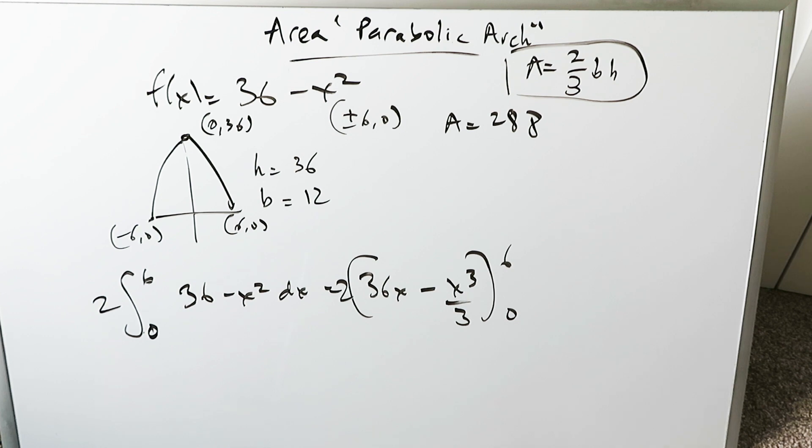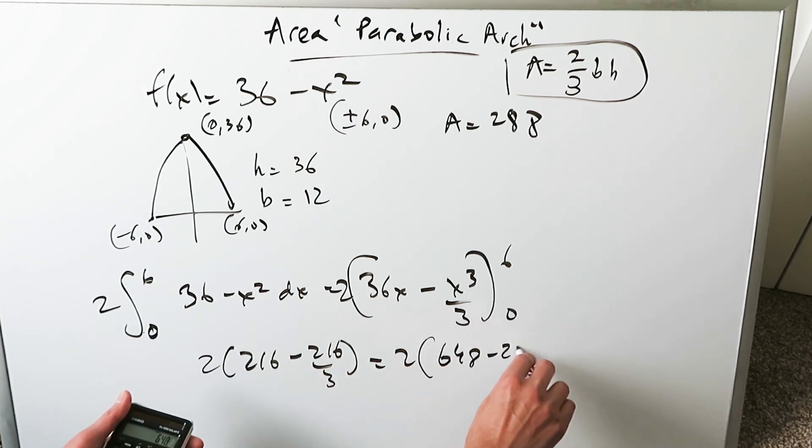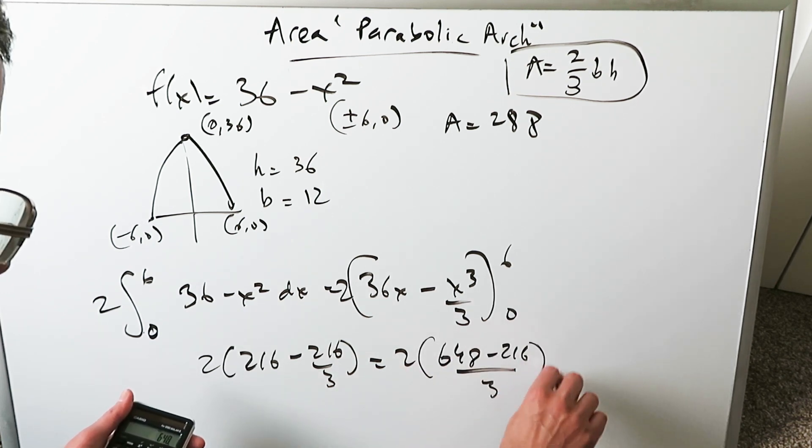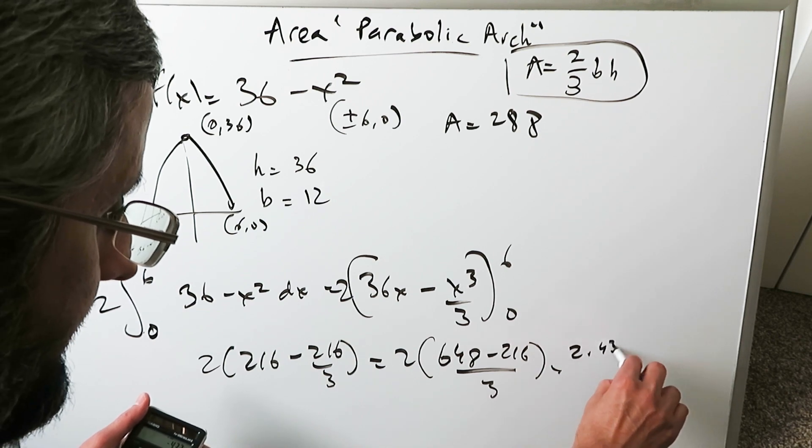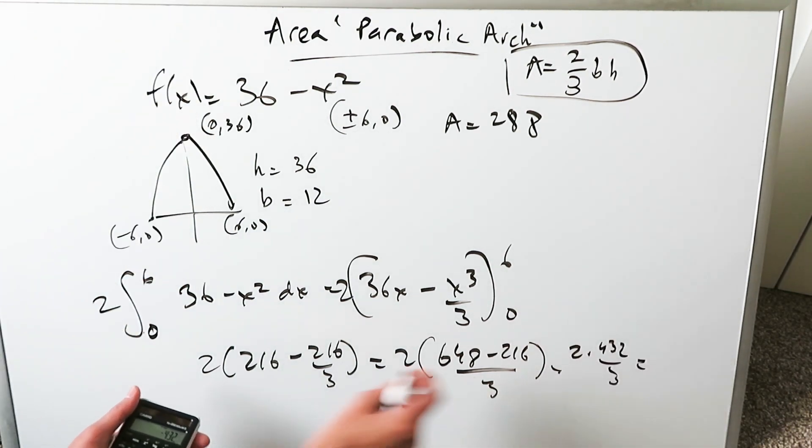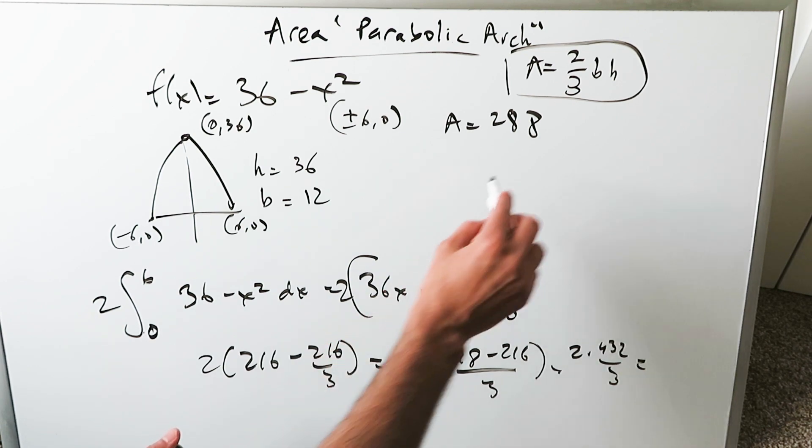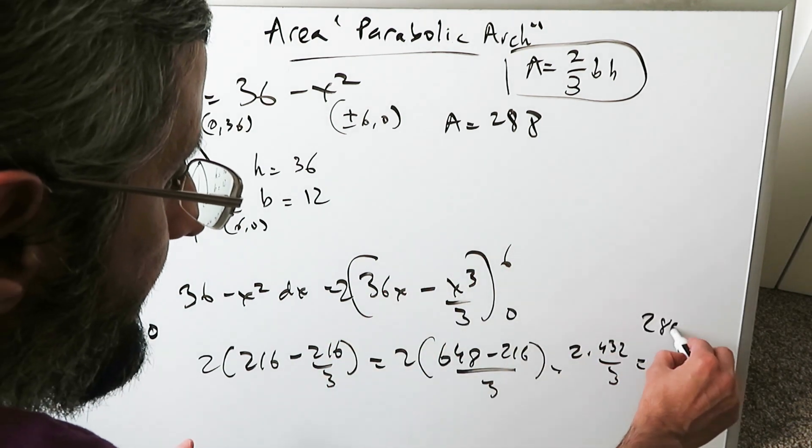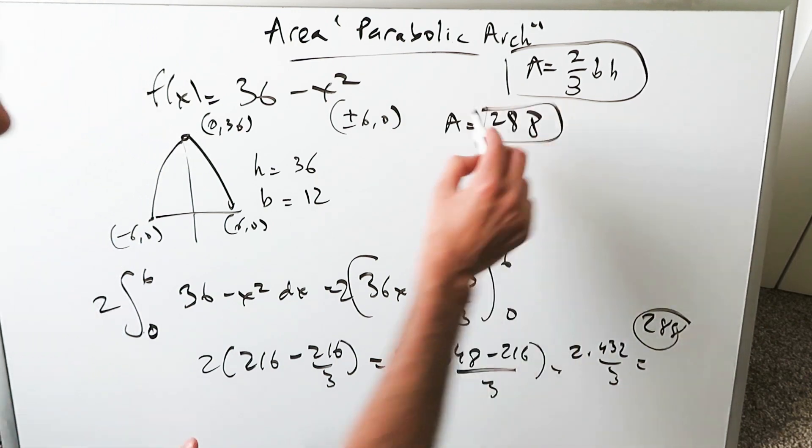Put 6 and put 0. You'll have 2 times (216 - 216/3). Simplify the part in the parentheses. It'll be (648 - 216)/3. You will get 2 times 432/3 and multiply that. 2 times 432 divided by 3 you get 288. And that's the benefit here of the integral calculus procedure.